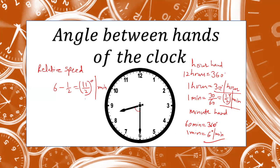Using this relative speed and the hour hand speed of 30 degrees per hour, we can create a formula. The angle between the two hands is given by θ = 30H − (11/2)M, where H is the time in hours and M is the time in minutes. 11/2 is the relative speed. For example, for the time 8:30, H is 8 and M is 30.